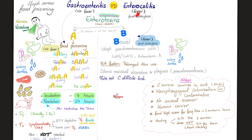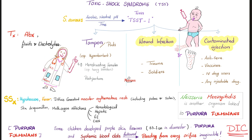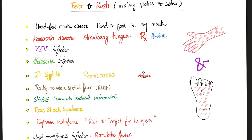Staph aureus gastroenteritis happens by enterotoxin A; pseudomembranous colitis caused by staph is from enterotoxin B. Staph food poisoning: watery diarrhea after eating contaminated potato salad, ham, salted pork, or desserts. This is a toxin-mediated disease, self-limiting, resolving within 24 hours. Toxic shock syndrome: associated with prolonged tampon use. Symptoms include hypotension, fever, diffuse generalized macular erythematous rash including the palms and soles. Can progress to multi-organ failure or purpura fulminans with DIC.